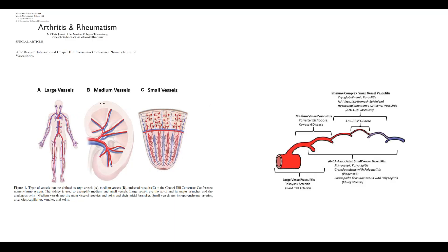In our body, we have three types of vessels. Large vessels, such as the aorta and its branches. Medium-sized vessels that supply blood to a particular organ — for example, coronary arteries supplying the heart, mesenteric arteries supplying the intestine, or renal arteries supplying the kidneys. And small vessels, such as arterioles, capillaries, and venules. Takayasu Arteritis affects large vessels — the aorta and its branches.